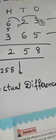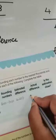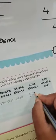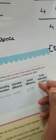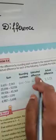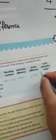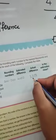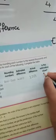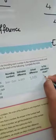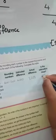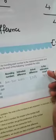Actual difference is 3,258. So, is the estimation close? We got an estimated difference of 4,000, but the actual difference is 3,258. So what do we write here? No — the estimation is not close.